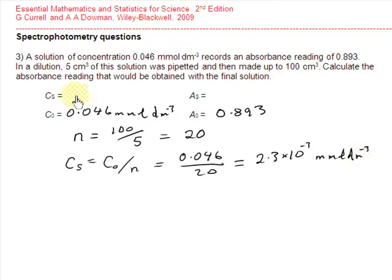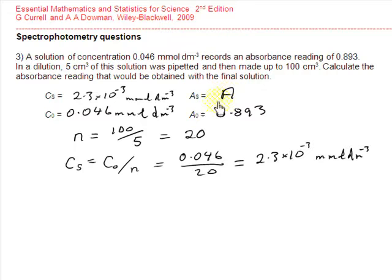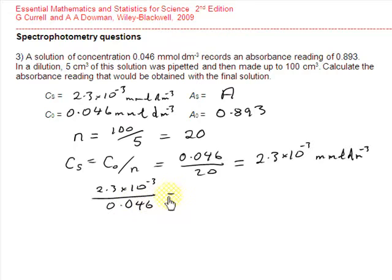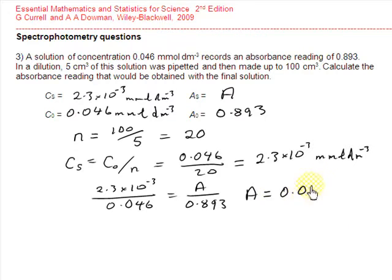With Cs equal to 2.3 × 10⁻³ millimoles per decimetre cubed, we calculate the final absorbance A. Substituting into our proportionality equation, 2.3 × 10⁻³ divided by 0.046 equals A divided by 0.893, giving a value of A equal to 0.0447.